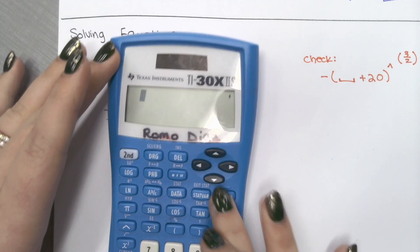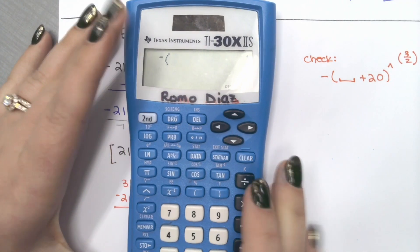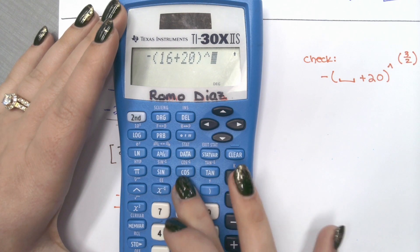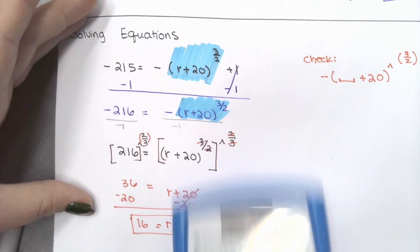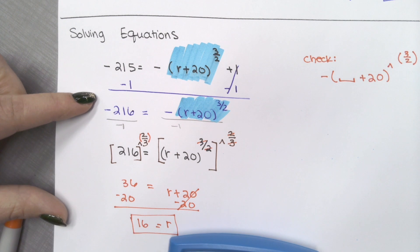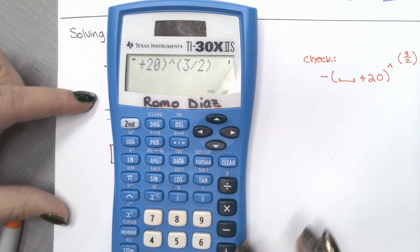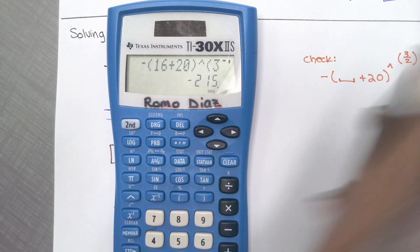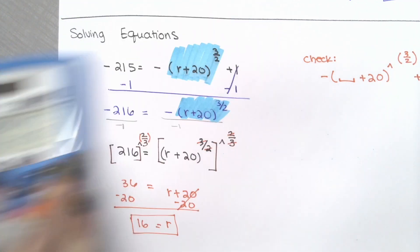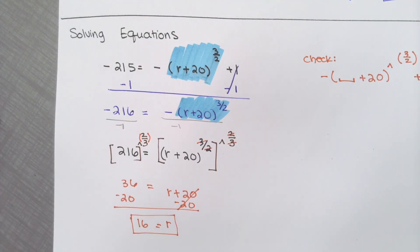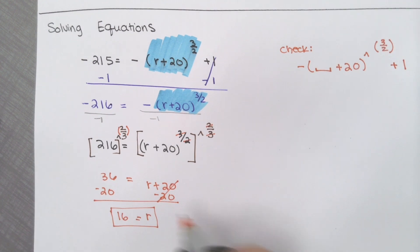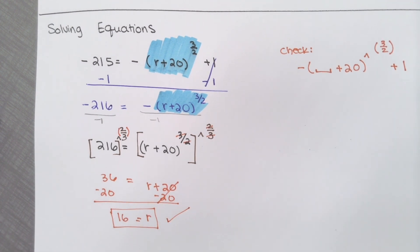Let's do that check really quickly. We have negative parentheses 16 plus 20, raised to the power of 3 halves, and it gives me negative 216. We're still adding one, plus one — and that works out. So learn from me: make sure you write the entire thing down when you're checking. Put a little check mark on there. For the check, I don't actually need to see the check, but you do actually need to do it. It's going to be very obvious when I give you extraneous solutions and you keep them in your answer — it'll prove to me that you didn't check.